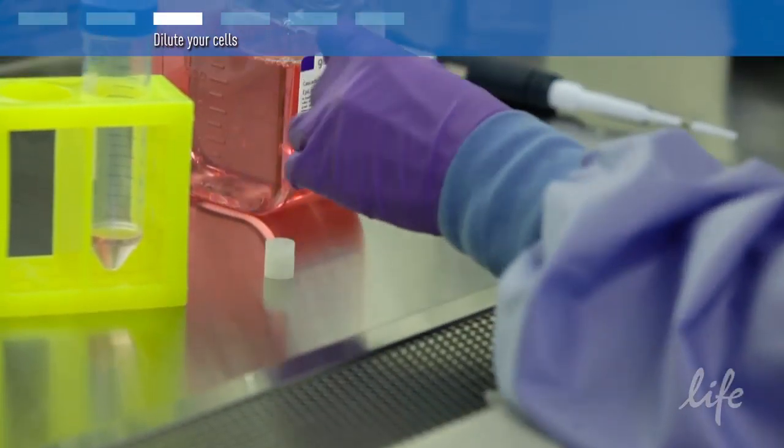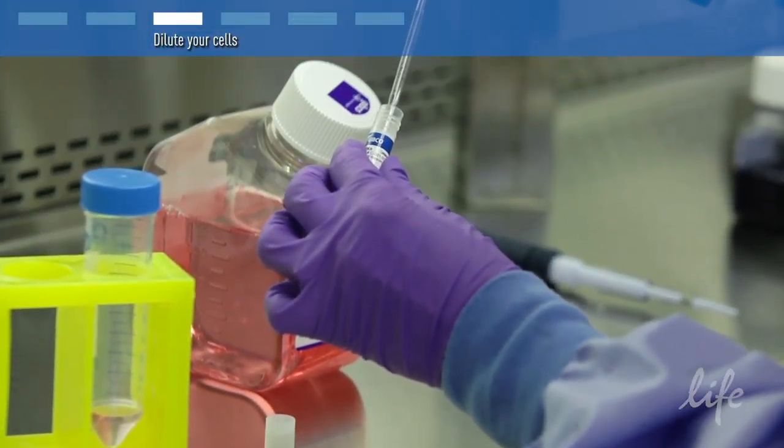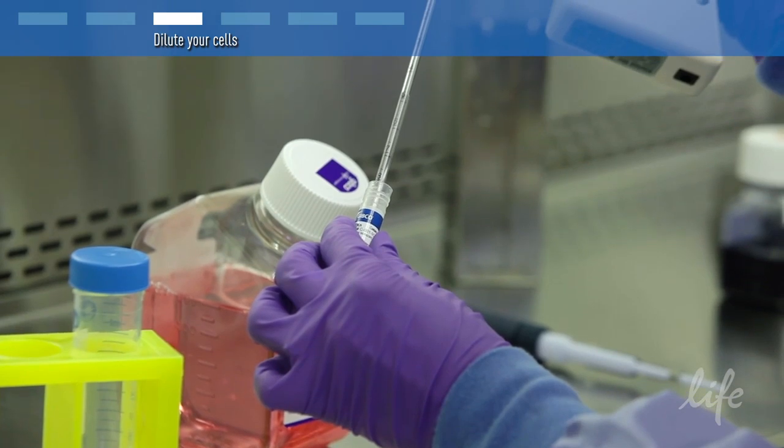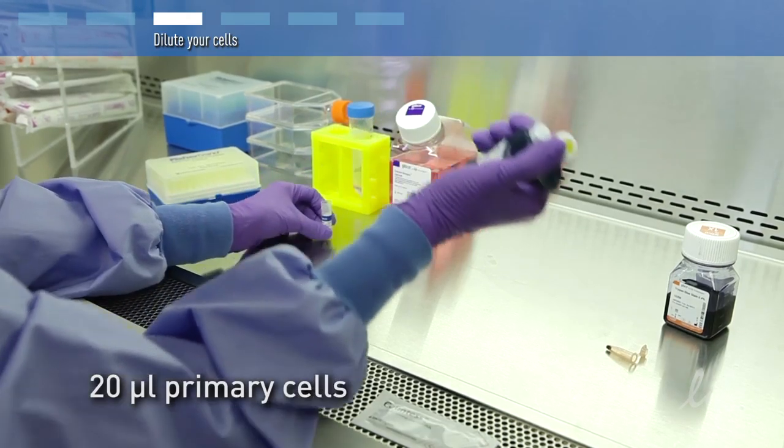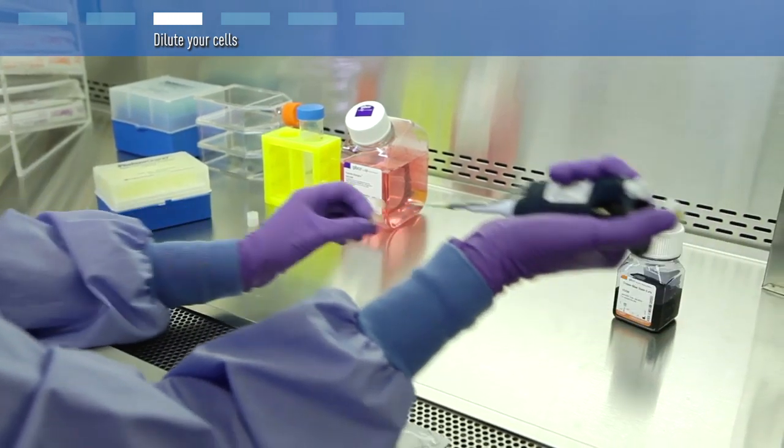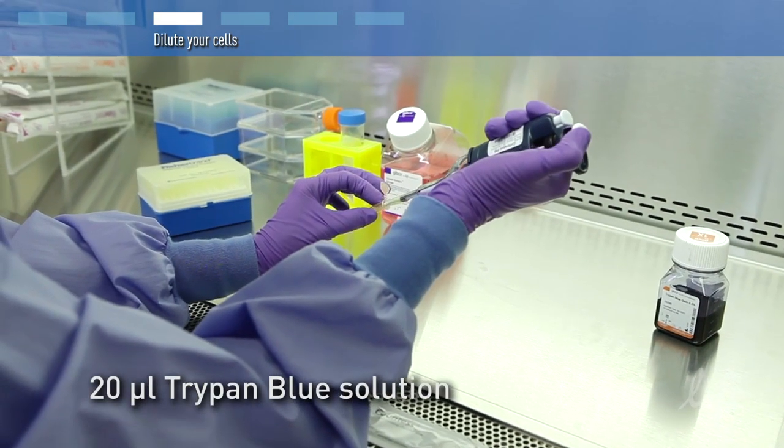Gently pipette the thawed cell suspension up and down to mix using a 1 ml pipette. Remove 20 microliters from the vial and add this to a separate tube that contains 20 microliters of Trypan Blue solution.